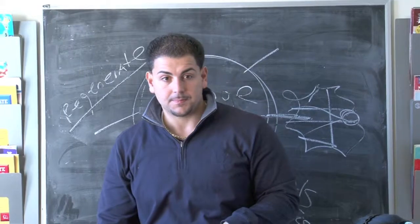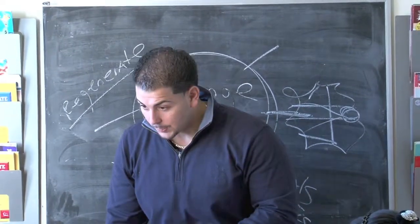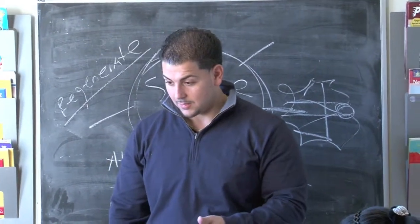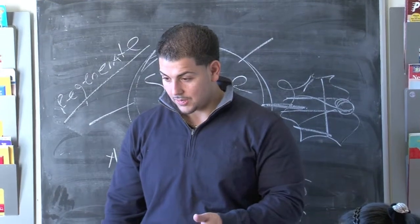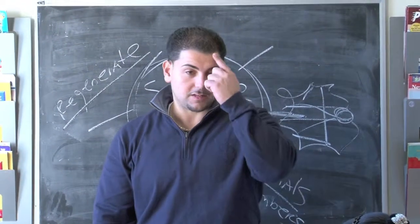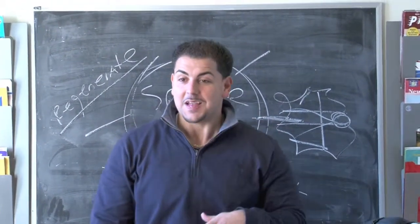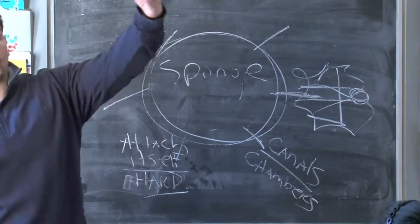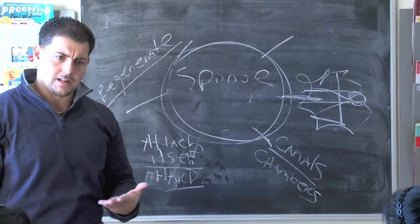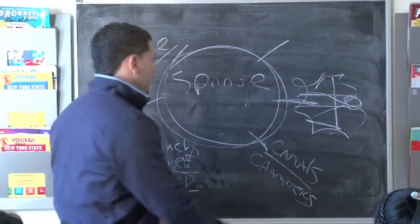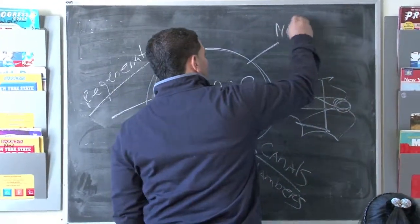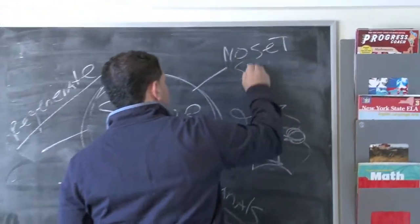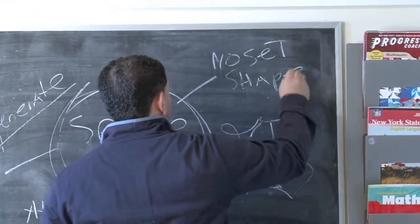Has anybody ever gone scuba diving? No. You've been scuba diving? Where? China. China. It's amazing. So, if you go scuba diving and the water is really deep, particularly if you go to the Caribbean, you'll see a lot of sponges. They come in different colors? Yes. Different colors, okay. So, no set sheet. And they come in different colors.